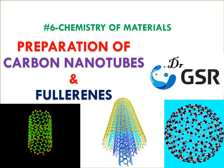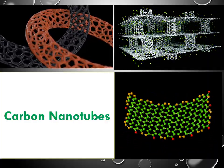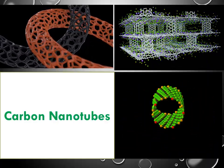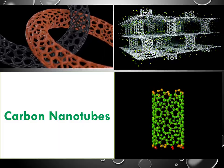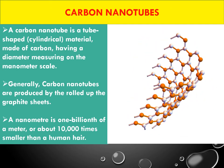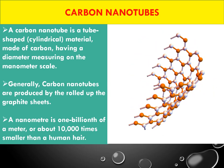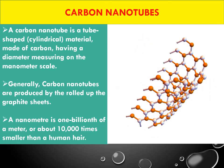Starting with carbon nanotubes — the name itself tells us they are materials made up of carbon having a tube-like cylindrical shape structure. One of the dimensions of the material should be within the nanoscale. Carbon nanomaterials are made by carbon and have a spherical structure with size within the nanoscale.